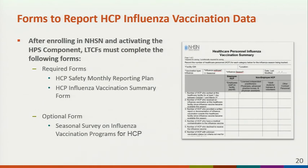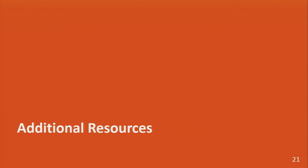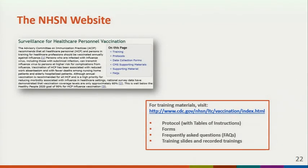This slide shows an image of the healthcare personnel influenza vaccination summary form. The next slides go over resources that may be helpful for long-term care facilities when reporting influenza vaccination summary data. Facilities can visit the NHSN website using the link on the slide. The website contains links to the protocol, data collection forms, frequently asked questions, comprehensive training slides, and recorded trainings for healthcare personnel influenza vaccination summary reporting.